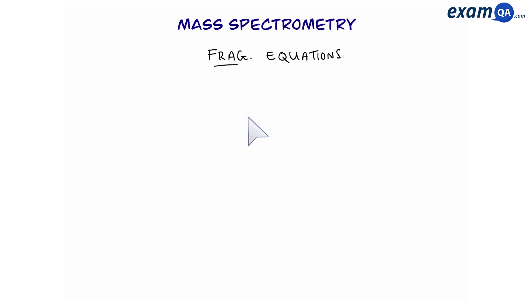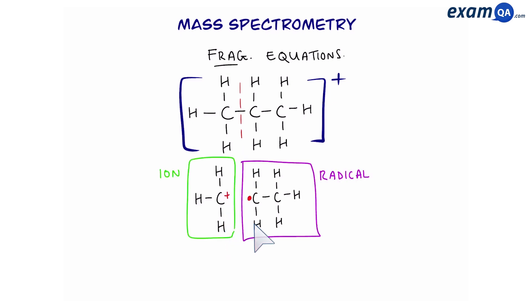You might also be expected to write fragment equations. Let's use propane as an example. Once we put propane into the machine, let's say it breaks down from here. This creates two fragments. One will be an ion, and one will become a radical.